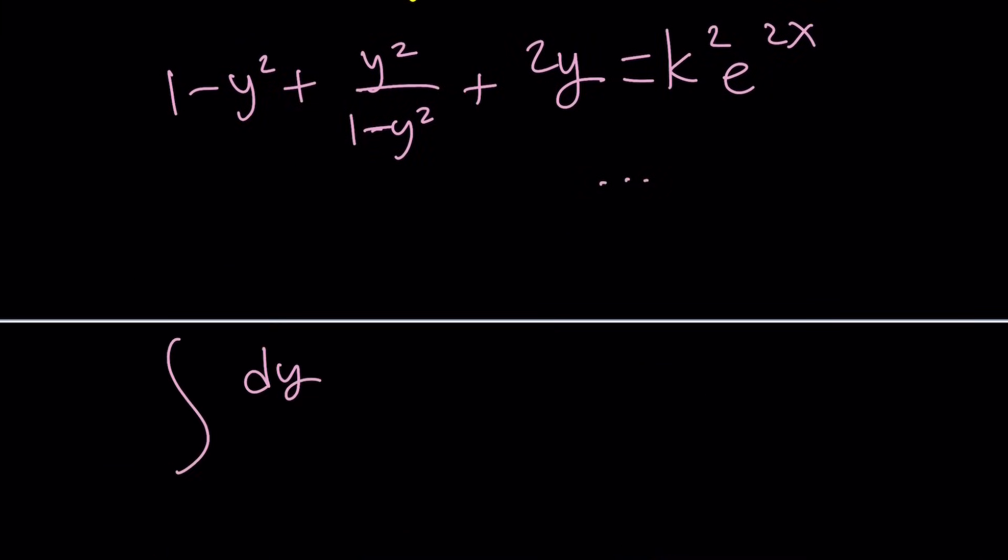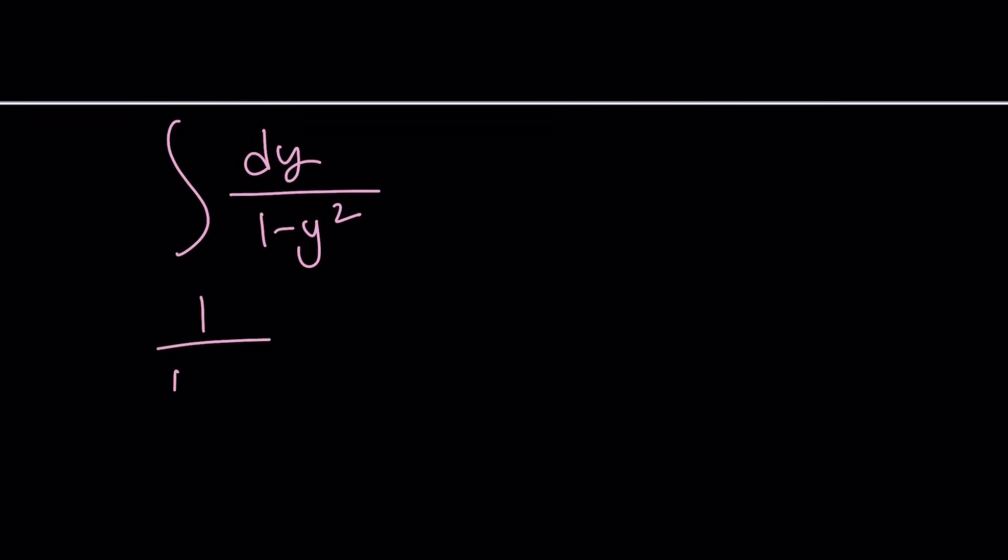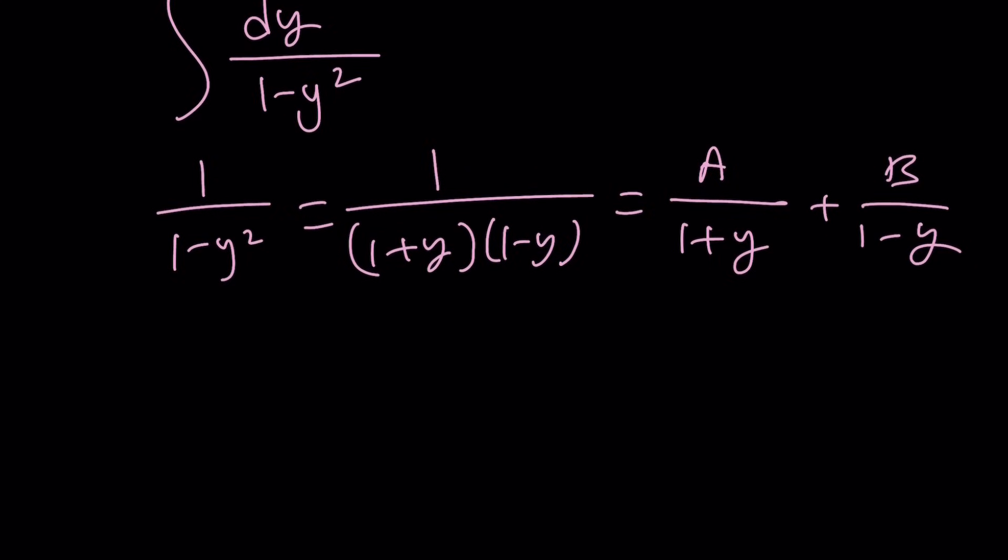Now, another way to integrate this expression is to use what's called partial fractions. So I'm going to write this as 1 plus y times 1 minus y first. And then I want to assume that this can be separated into A over 1 plus y plus B over 1 minus y. Because the factors in the denominator are rational, the numerator should be constants because there's a difference of 1 in degrees.